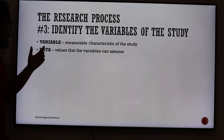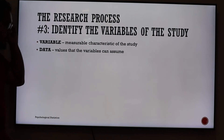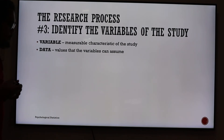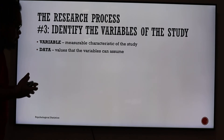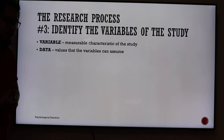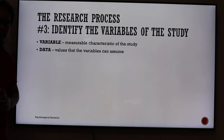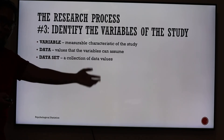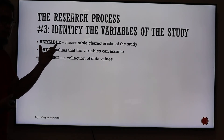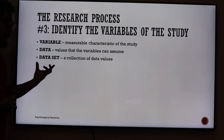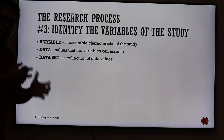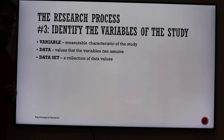Data, or data, are values that variables can assume. For example, say you want to determine the height of persons and see if there is a common height among freshman students. Your variable is the height. Your data are the actual heights you got from your respondents or sample. When you collect all that data, what you have is a data set — a collection of data values. The variable is height; the data are individual heights; and the dataset is the group of heights you have.